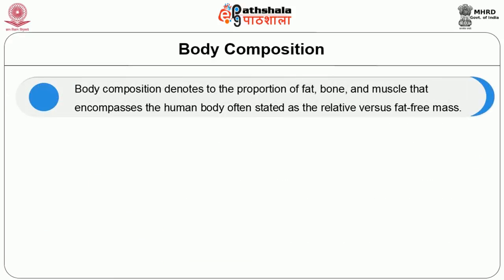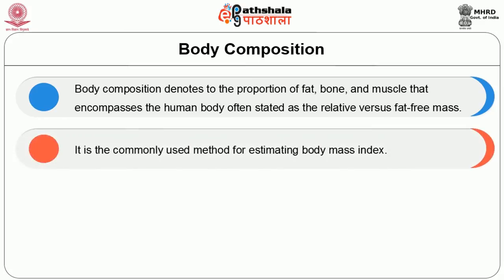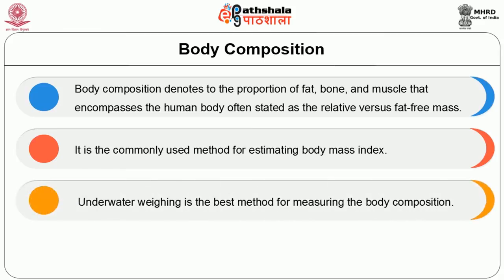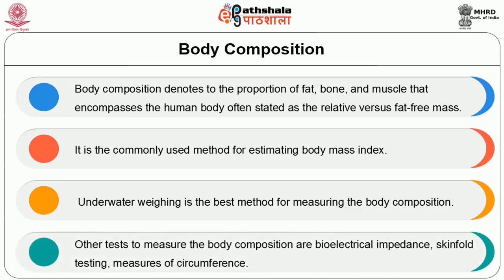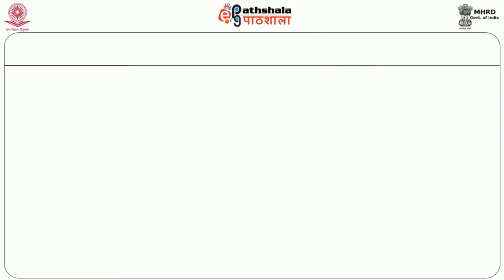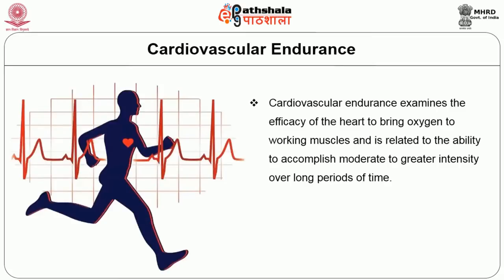The method for assessing body composition denotes the proportion of fat, bone, and muscle that comprises the human body — often stated as relative fat versus fat-free mass. A commonly used method is estimating body mass index (BMI). Underwater weighing is the best method for measuring body composition. Other tests include bioelectrical impedance, skinfold testing, and measures of circumferences.